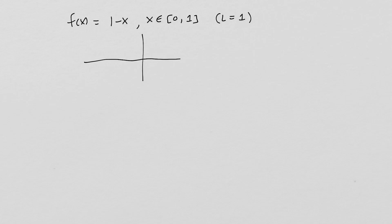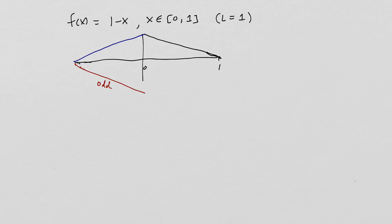Let's get a graph of what this looks like. Going from 0 out to 1, the function is just a declining line. The odd extension looks like a reflected and negated copy, and the even extension is just the pure mirror image.